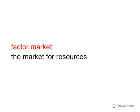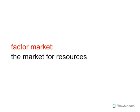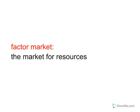As we're going to see later on in this unit, just like product markets can have different market structures — perfect competition, monopoly, oligopoly, etc. — factor markets can have different market structures as well.